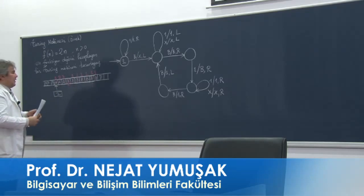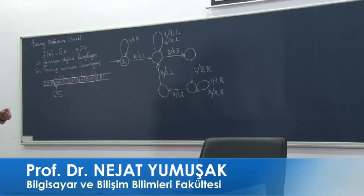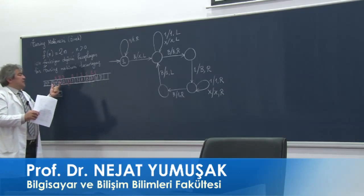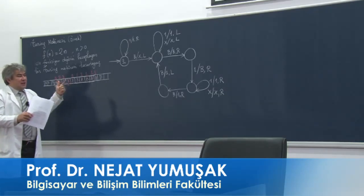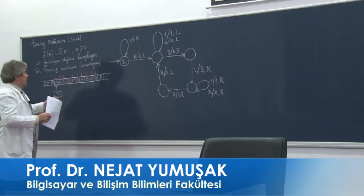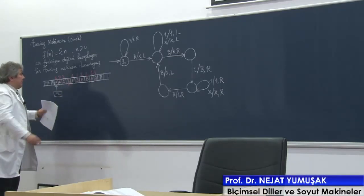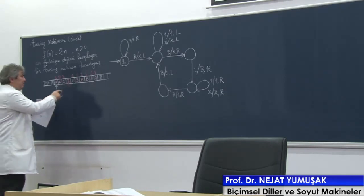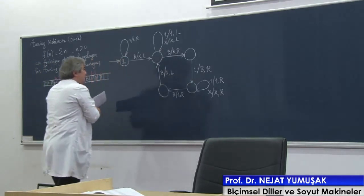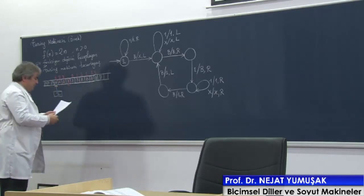Ve X gördüm. Sevgili arkadaşlar, bu ne anlama geliyor? Birler şu anda bitti. Birler bittiyse, onların her bir 'bir' için karşı tarafa iki tane bir yazdım. Dolayısıyla şimdi burada durmam lazım. En son simgede dursun istiyorum. X gördüm; bir görseydim devam edecektim, ama X gördüm. X yazıyorum, sola hareket ediyorum.